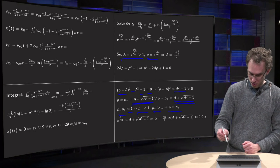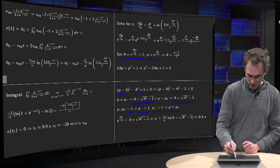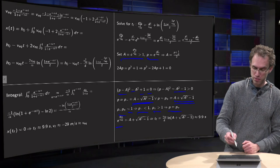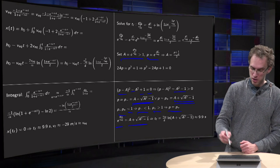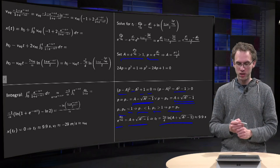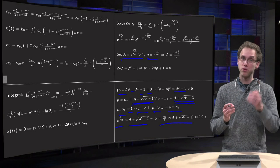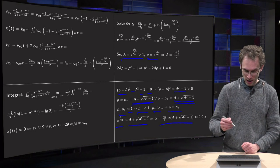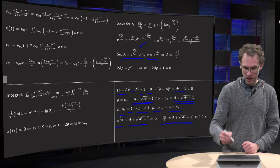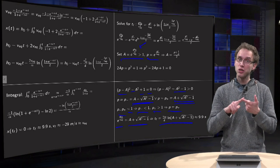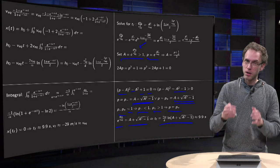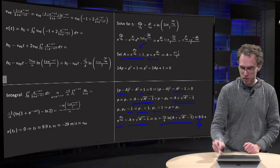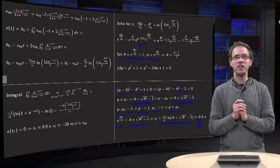So finally: p equals e^(g·t_final/v_equilibrium) equals a plus sqrt(a^2 minus 1). You can then solve for t_final in terms of v_equilibrium, g, and ln(a), where the constant a contains g, the initial height h_0, and v_equilibrium. Plugging in all the numbers gives a t_final of about 10 seconds.